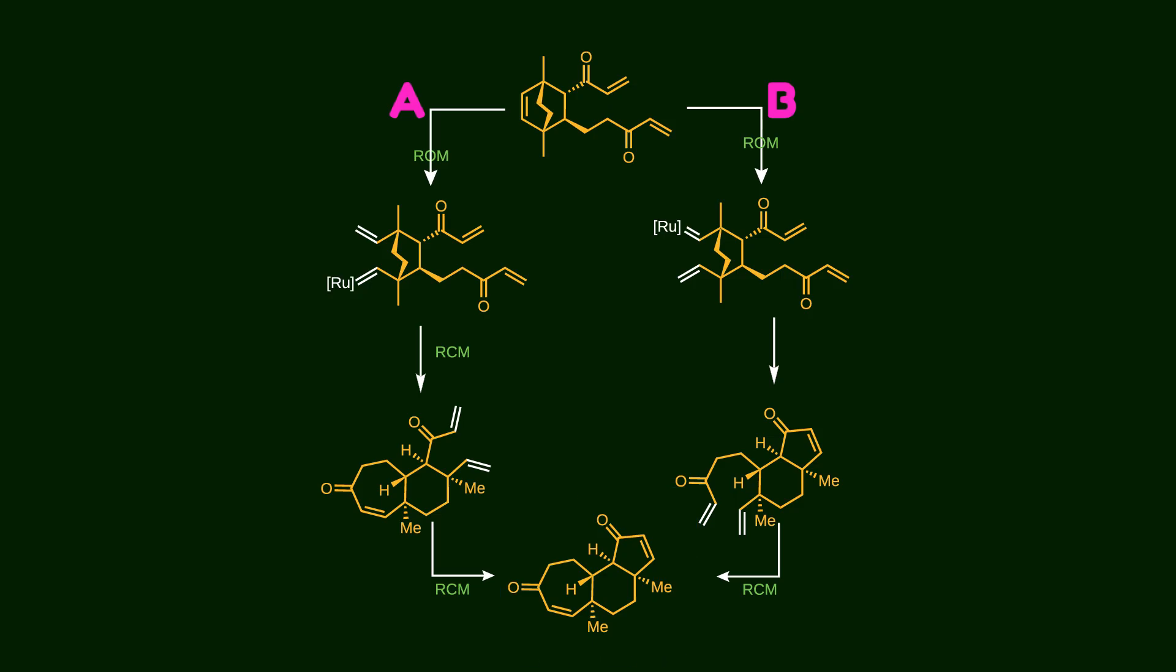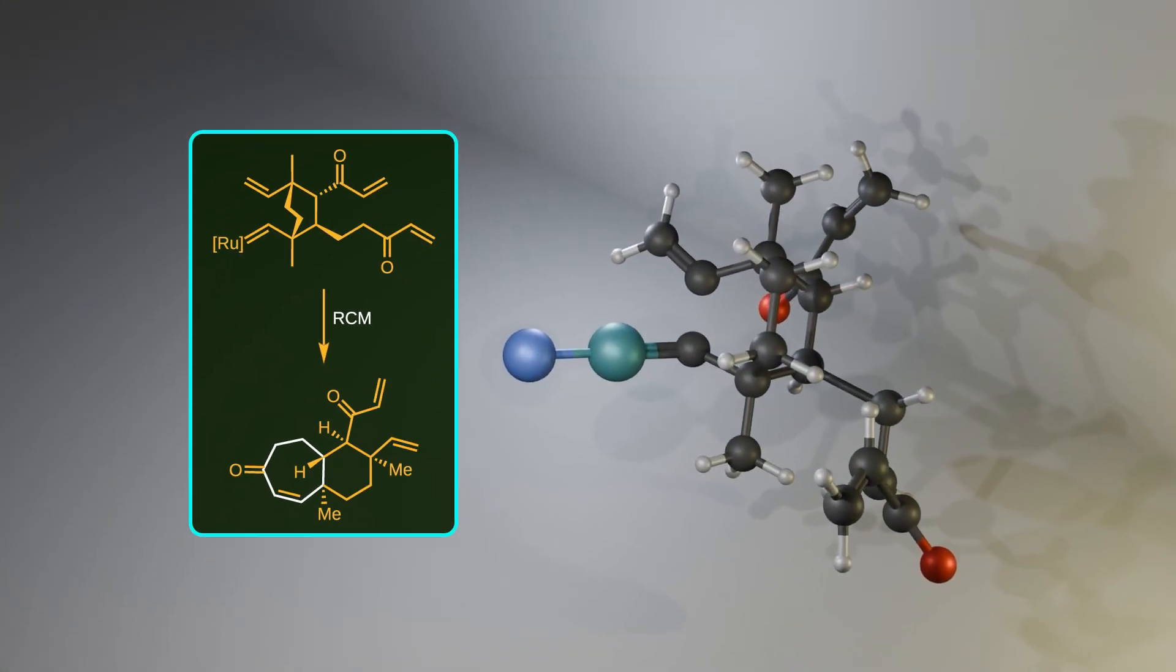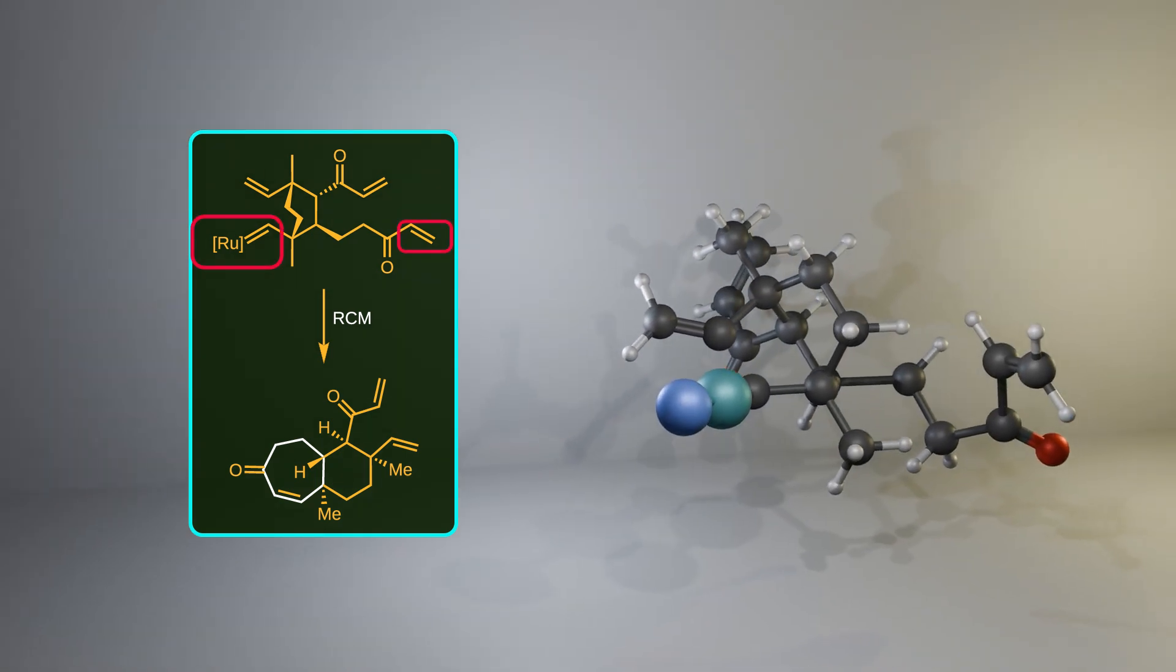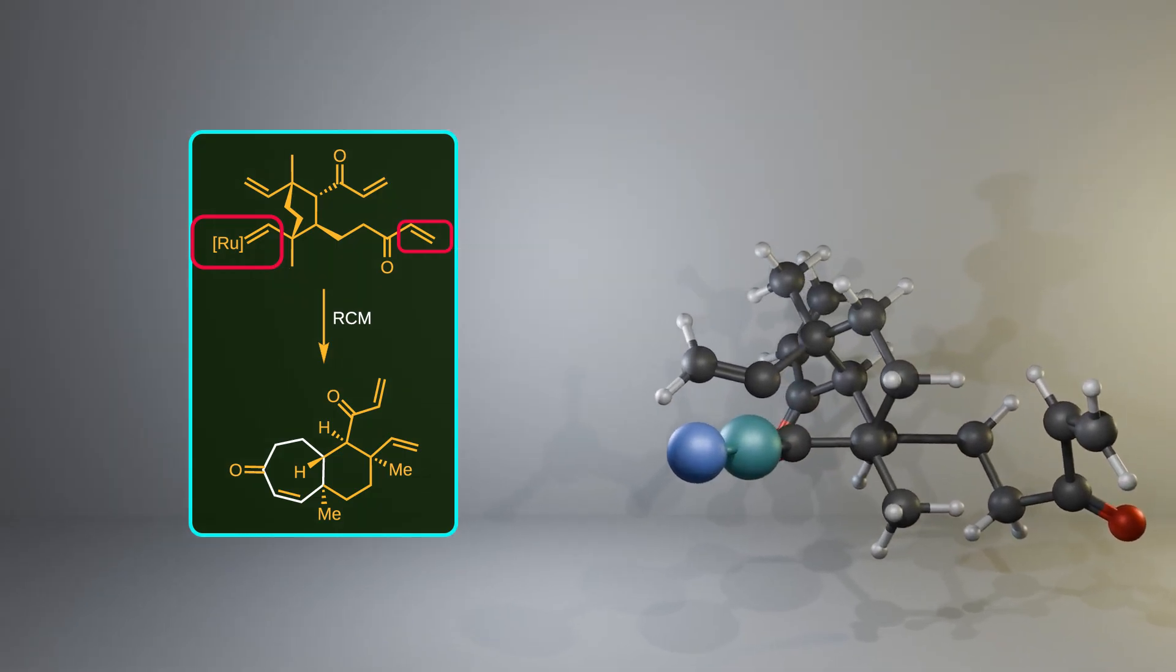Let's first analyze Path A. In this route, three double bonds participate in metathesis. First note that this particular double bond is more reactive than the others due to ring strain. So, it reacts first with Grubbs catalyst. This step is a ring-opening metathesis reaction. If you look at the 3D model, you can clearly see that ruthenium and its double bond come close together, setting up for formation of the seven-membered ring through ring-closing metathesis.